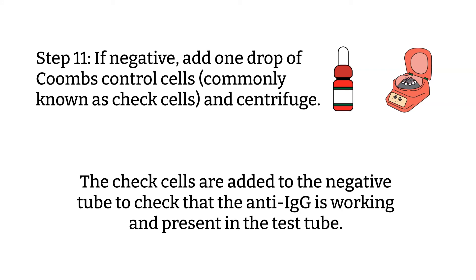Adding the check cells to our negative tube is to confirm that the anti-IgG is working and present in the test tube. Therefore, if your test tube is still negative after adding check cells, your test is invalid and has to be repeated.